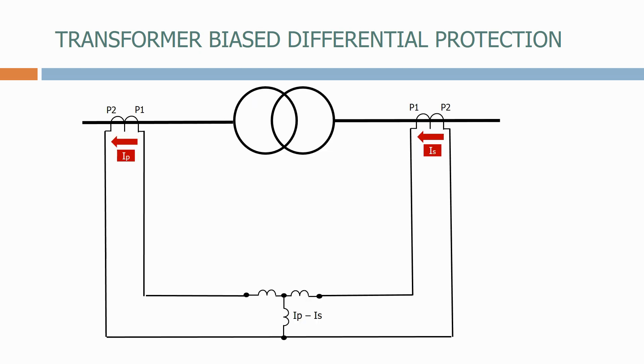Here we have our transformer from before. We've now added a new winding called the bias winding. This winding measures the value of the through current. Let's now add the bias characteristic so we can see what's going on.